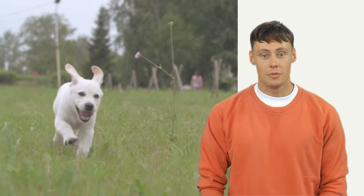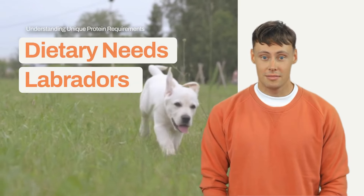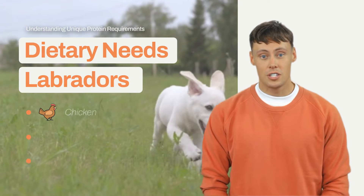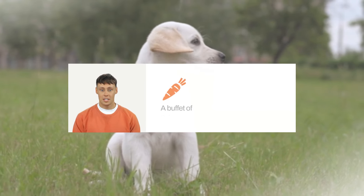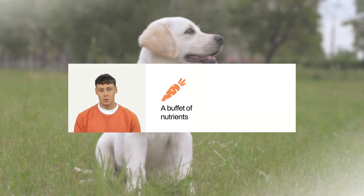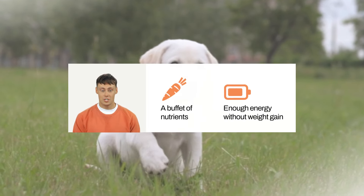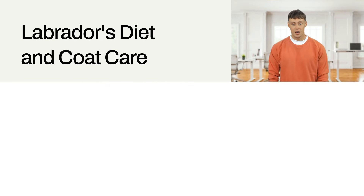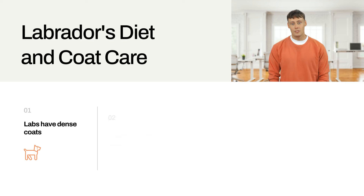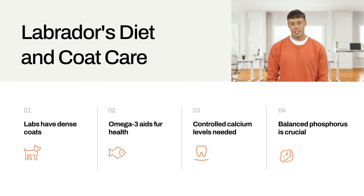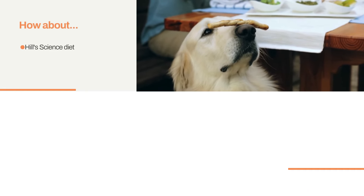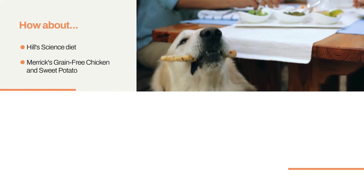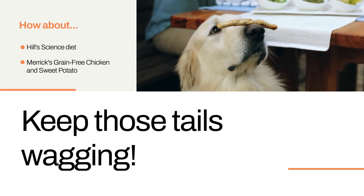Let's turn our attention to our lovable Labradors today, especially their unique dietary needs. These energetic fur balls require a diet rich in proteins such as chicken, beef, or fish. It's not just about proteins — our labs need a buffet of nutrients: a mix of proteins, fats, and carbs to ensure they can outlast a toddler on a sugar rush without gaining those extra pounds. Labs come with that beautiful dense coat — omega-3 fatty acids are like a spa treatment for their fur. Also look for controlled levels of calcium and phosphorus in their food — not too much, not too little, just right. You might even want to consider dog foods like Hill's Science Diet or Merrick's grain-free chicken and sweet potato recipe. Let's keep those tails wagging, ears flopping, and bellies full of yummy nutritious food.